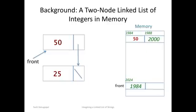Starting at the address 2000 the integer 25 occupies the first four bytes. The next four bytes starting at 2004 holds the address 0 for the null pointer since the 25 node does not have a node after it.